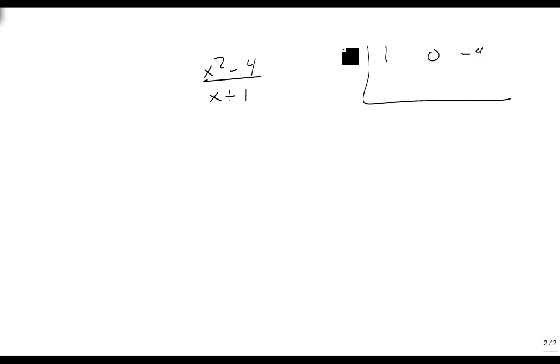1, 0, minus 4. We put a minus 1 here. And this gives me x minus 1 minus 3 over x plus 1.